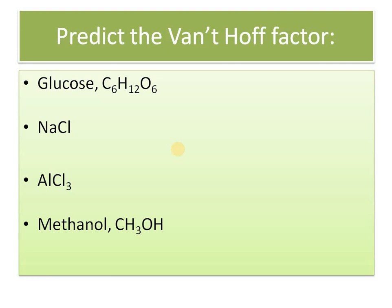Let's predict the Van't Hoff factor. For glucose, which is a non-electrolyte, i = 1. For NaCl, which gives 2 ions, i = 2. For AlCl₃, which gives Al³⁺ and 3 Cl⁻, total 4 ions, so i = 4. Similarly, methanol does not give any ions, so i = 1.